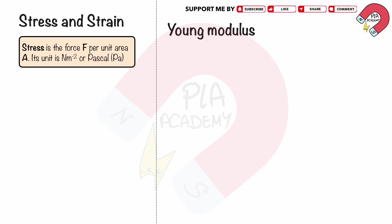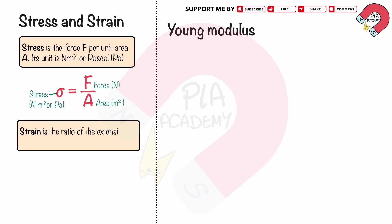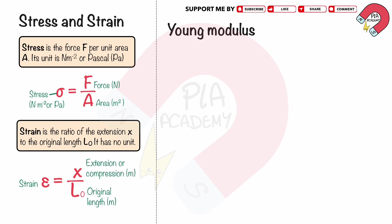Stress is the force F per unit area A. Its unit is newtons per square meter or pascal. We can write the equation as sigma equals F divided by A, where sigma is stress in pascals, F is the force in newtons and A is the cross-section area in square meters. Strain is the ratio of the extension X to the original length L0. It has no unit. We can write the equation as epsilon equals X divided by L0, where epsilon is strain, X is the extension in meters, and L0 is the original length in meters.